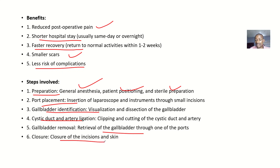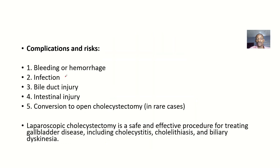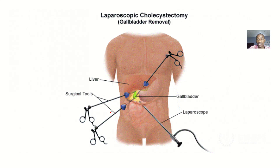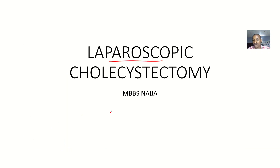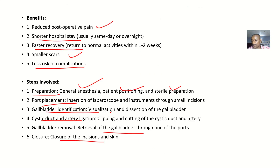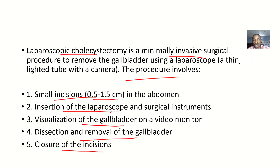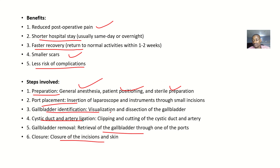Closure is where you close the incision and skin — that's when you are done. Complications include bleeding, spread of infection if the area is not sterile, bowel duct injury, intestinal injury, and conversion to open cholecystectomy — which happens when the laparoscopic approach doesn't go as planned and you have to convert to the open type. That covers the laparoscopic cholecystectomy: definition, procedure, benefits, steps, and complications.